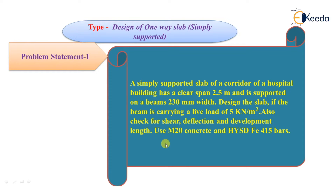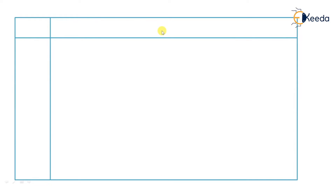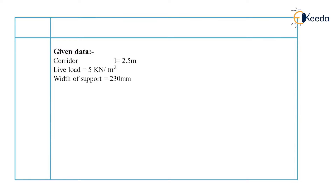In this problem, it is directly given that the slab is a simply supported slab and it is a corridor slab. Since corridor is given, we will consider the slab as a one-way slab. Given data: span is 2.5 meters, live load is 5 kN per meter square, width of support is 230 mm, fck is 20 N per mm square, and fy is 415 N per mm square.